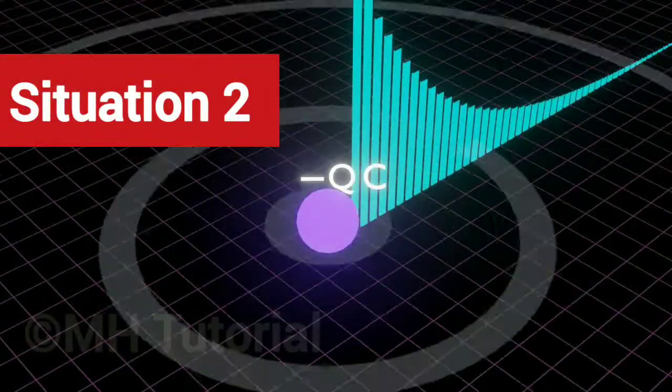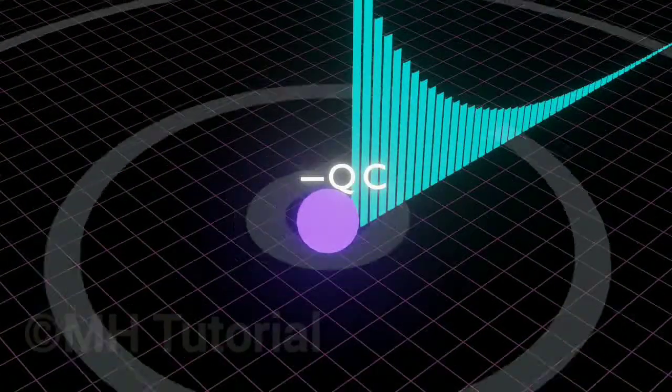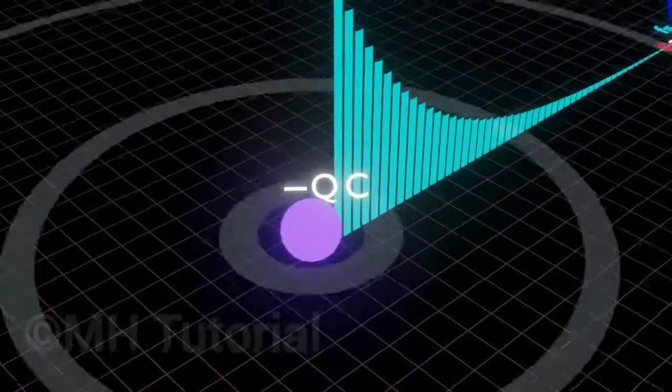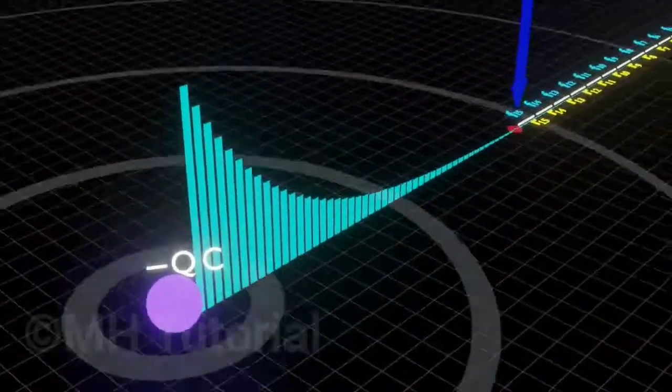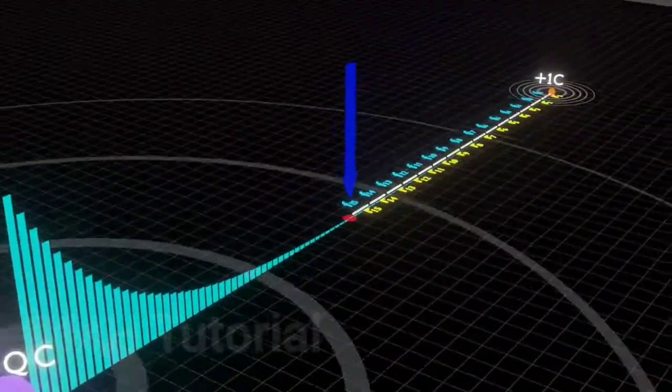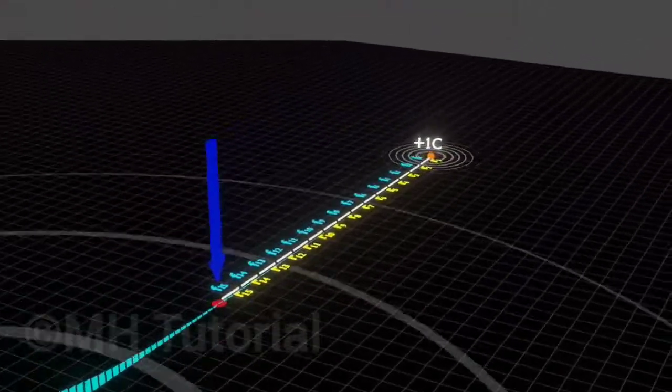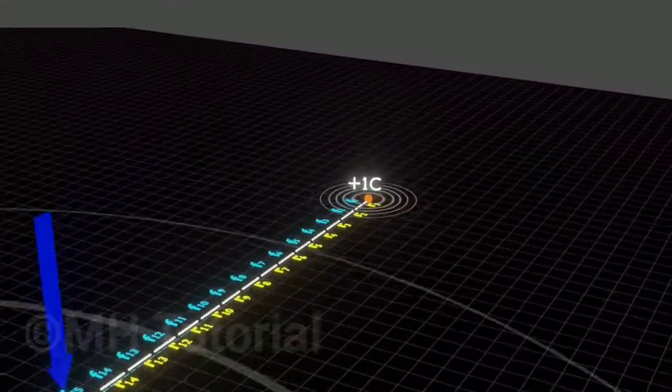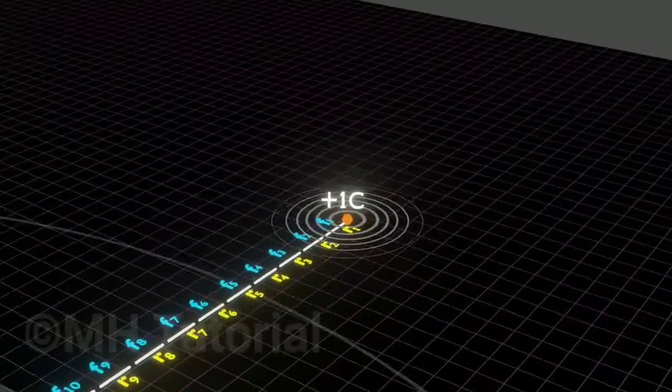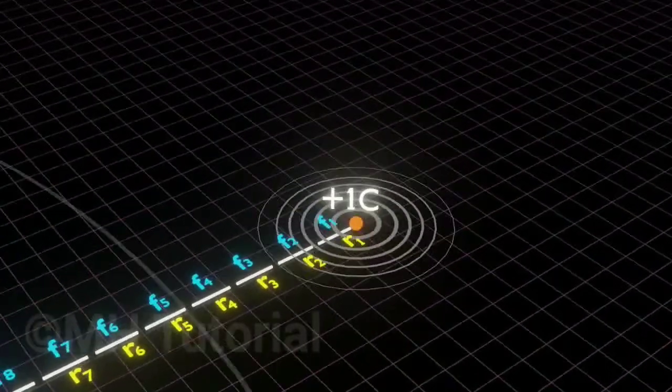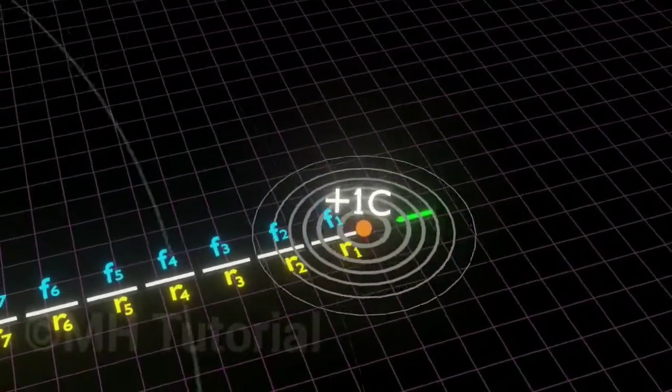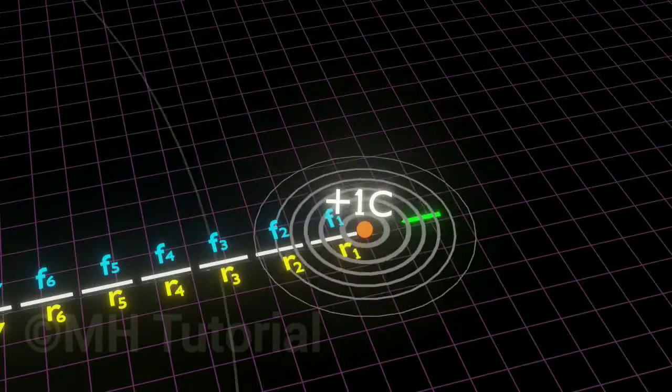Now let's take the second situation. The charges are opposite now. Since opposite charges attract each other, they will do so. If you place the plus 1 Coulomb point particle at rest far away from the huge charge Q, the particle will start getting attracted towards charge Q, and after some time it will reach the desired red point.